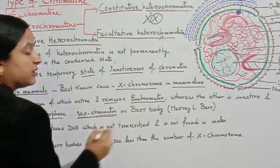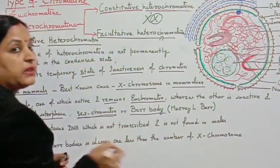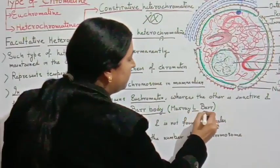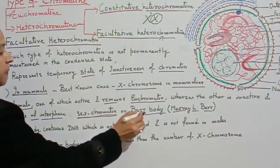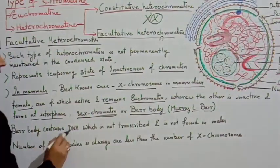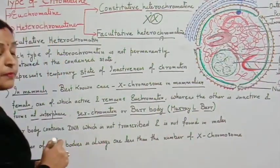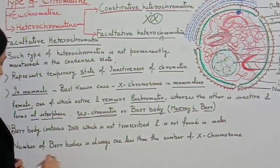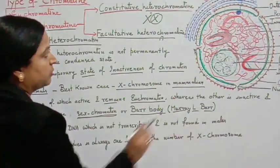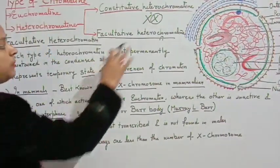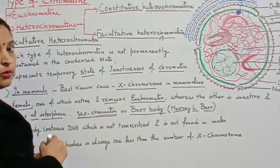The inactive X chromosome is called sex chromatin, also known as the Barr body, named after its discoverer Murel Barr. Sex chromatin and Barr body are the same thing. Barr body contains DNA which is not transcribed and is not found in males. The number of Barr bodies is always one less than the number of X chromosomes.